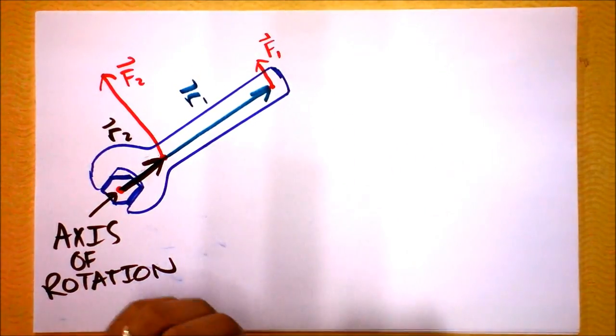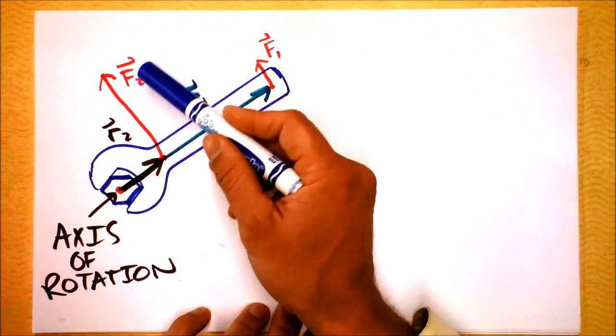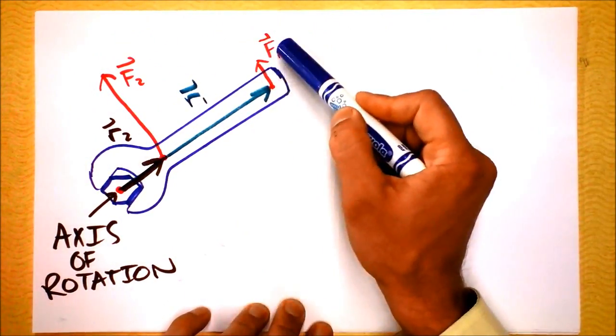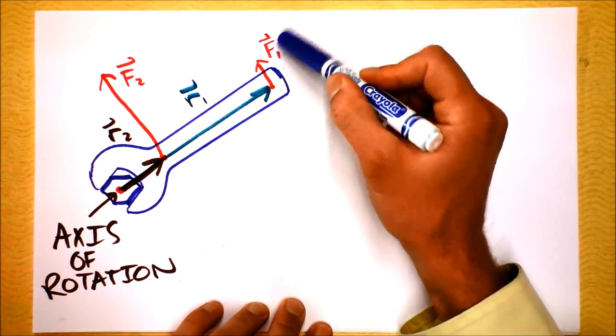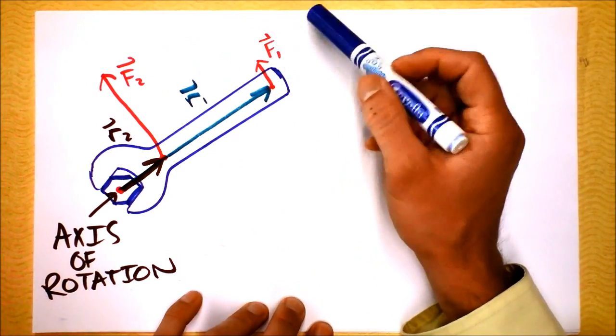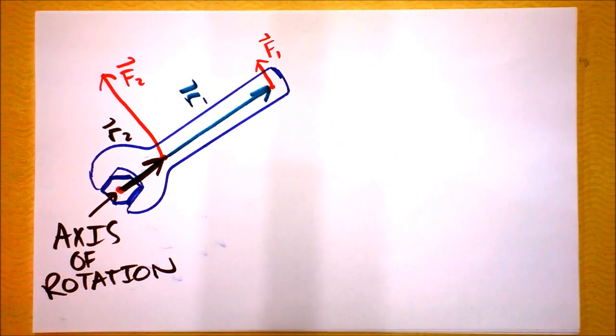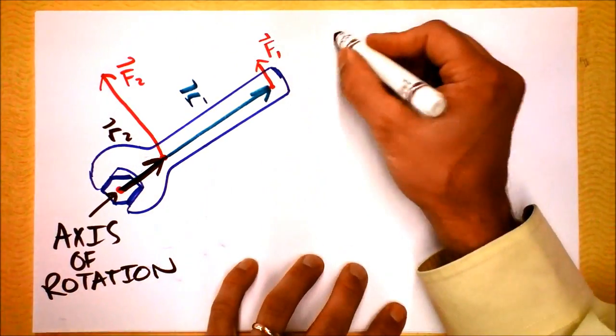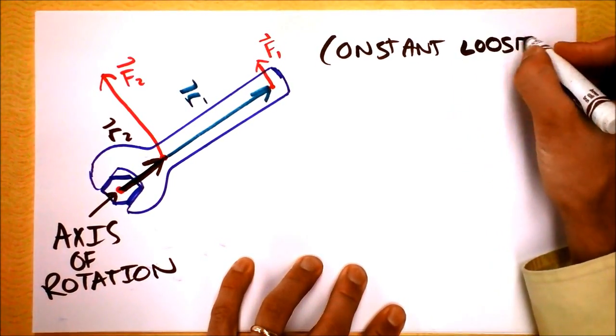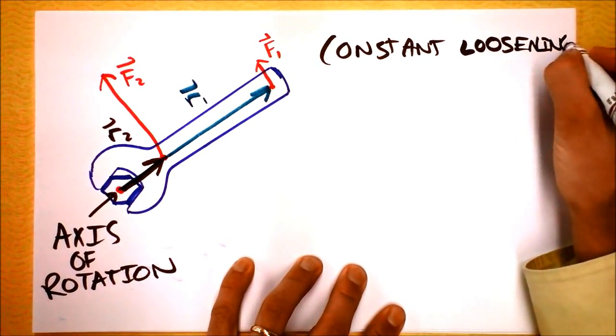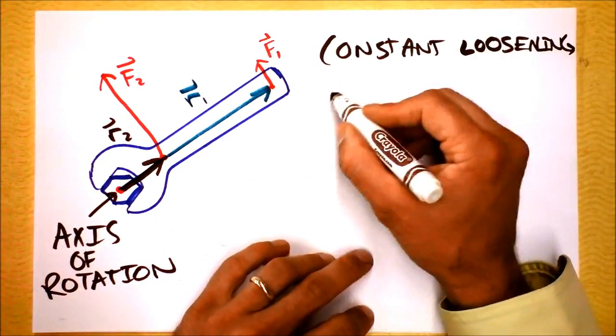And something must be the same. The stickiness of the bolt or something must be the same between F2 and R2 and F1 and R1. Notice you can either have a large distance out and a small force or you can have a small distance out and a large force. So we identify this quantity that is constant. We'll call it a loosening quantity for our particular situation of this wrench. Of course, it's going to be a very general thing.